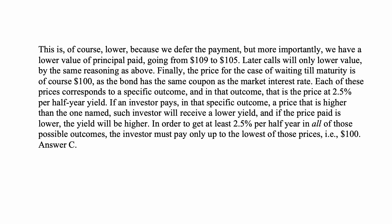Later calls will only lower the value by the same reasoning. Finally, the price for the case of waiting until maturity is 100, as the bond has the same coupon as the market interest rate. Each of these prices corresponds to a specific outcome, and in that outcome, that is the price at 2.5% per half-year yield. If the investor pays a price higher than the one named, they will receive a lower yield than 2.5%; if the price paid is lower, the yield will be higher. In order to get at least 2.5% per half year in all possible outcomes, the investor must pay only up to the lowest of those prices — so $100. And that's answer C.